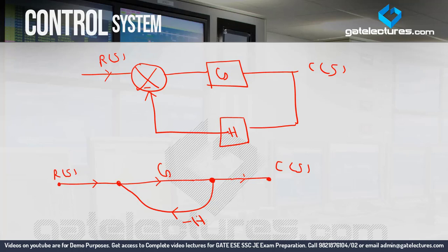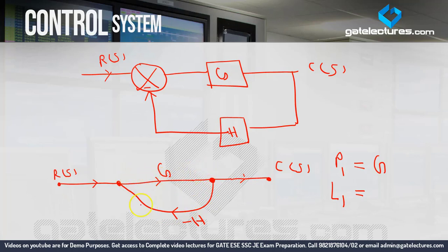We have converted the block diagram to signal flow graph. Now we need to calculate the transfer function. For the transfer function, first we need to calculate the forward paths. There is only one forward path here, from R(s) to C(s), which is G. After that, we need to calculate the loops. There is a single loop.